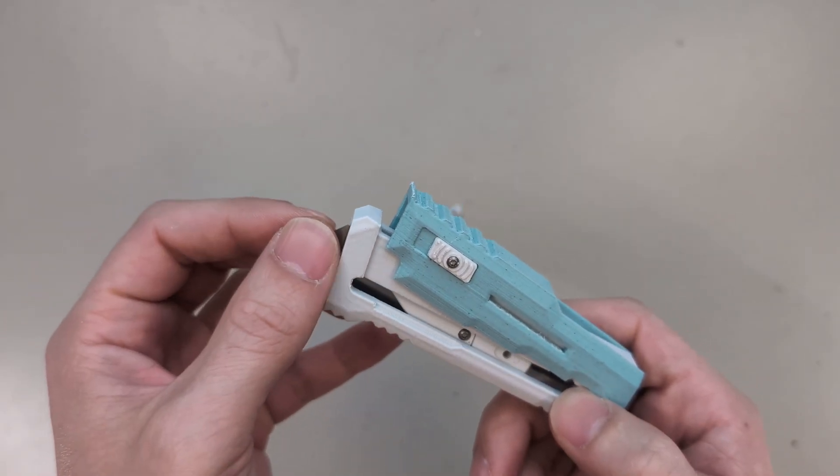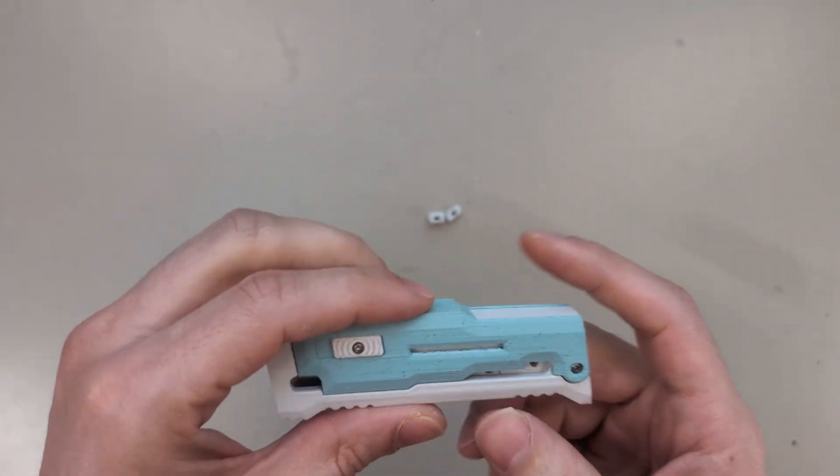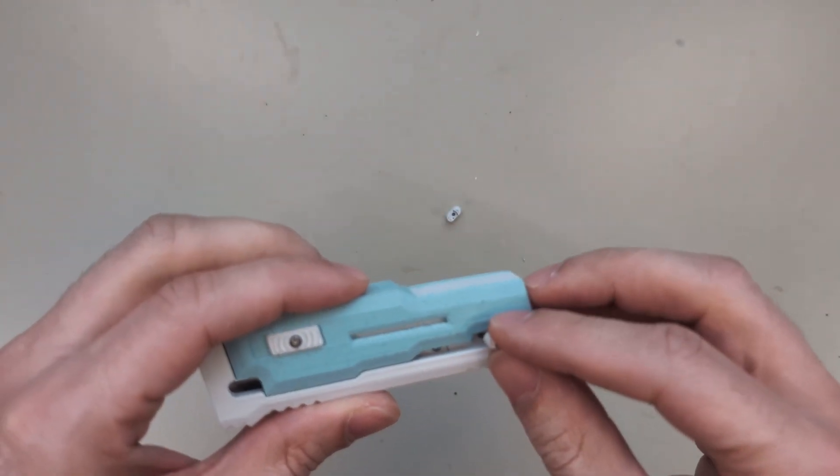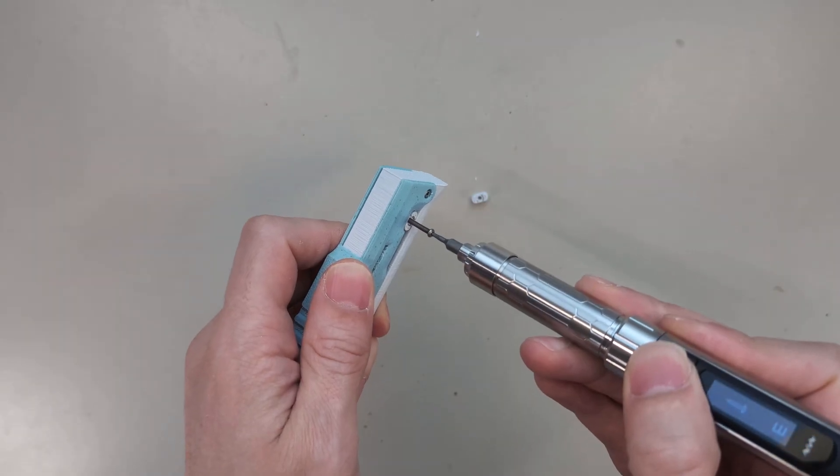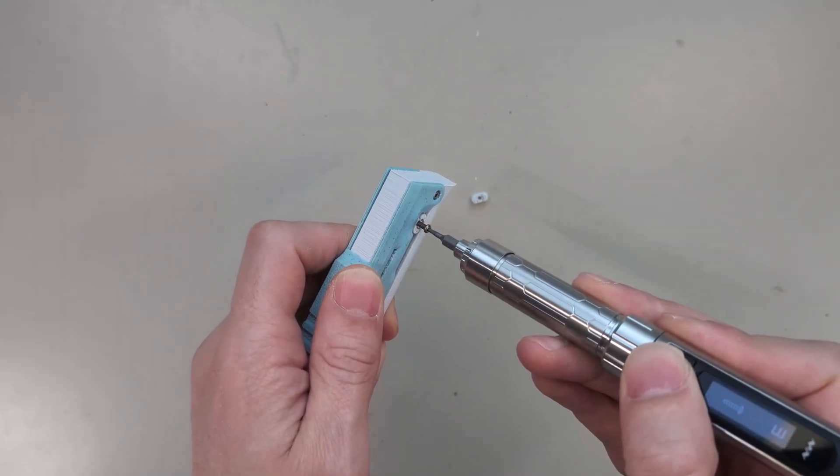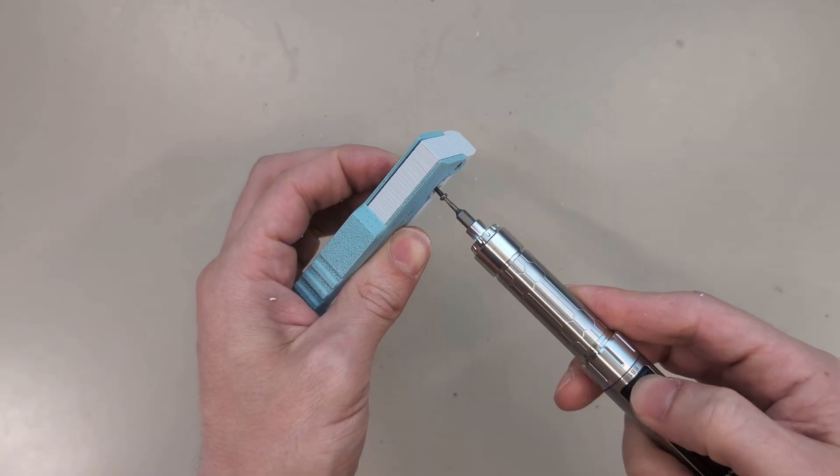For this we need another M2 by 14mm screw. Then we can slide in the blade assembly. On this side goes the block that is a bit taller than the other one. Screwing that in, but not all the way. Then you can add the other side. And screw all the way through.